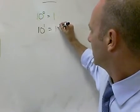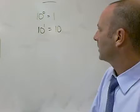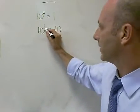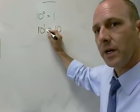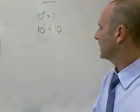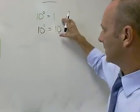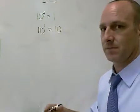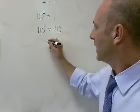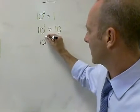Next in the pattern is 10 to the 1st, and that is 10. A couple things to notice: there's a 1 as the exponent, you've got 1, 0, and the number, and 10 is just there one time. You'll get that pattern here in a second.